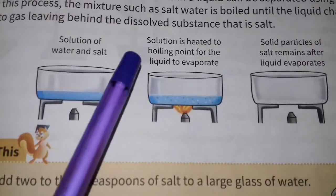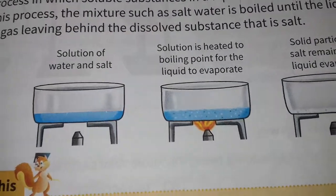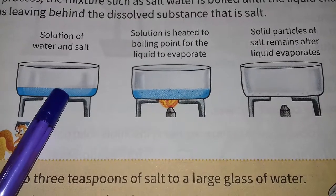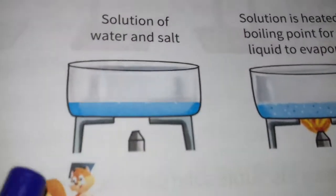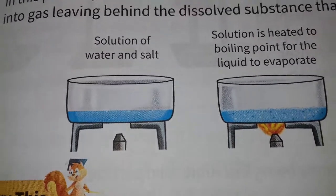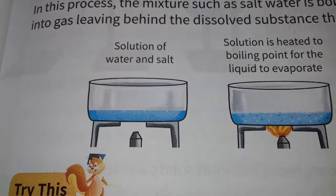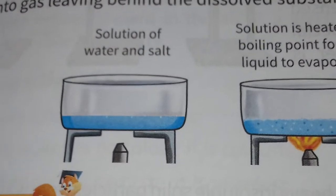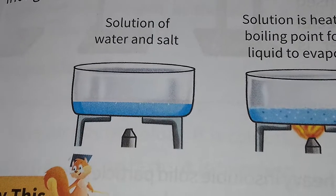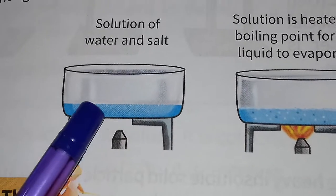When you buy salt from the market, you know that it was once dissolved in sea water — it has been separated from sea water. Evaporation is a process in which soluble substances in a liquid can be separated using heat. In this process, the mixture such as salt water is boiled.